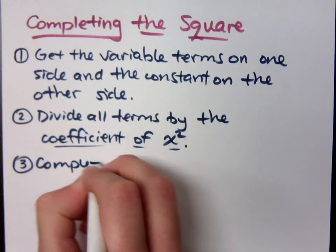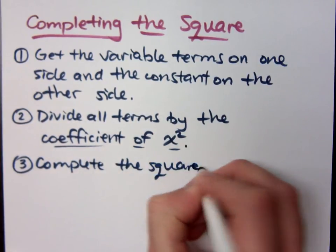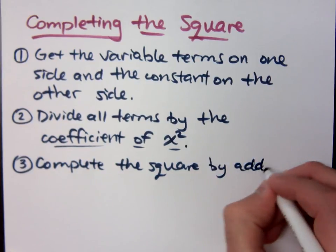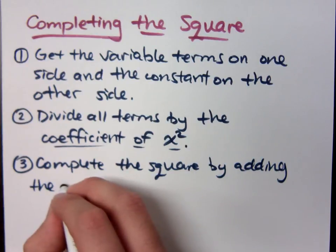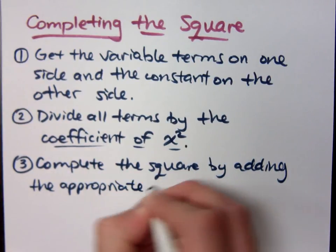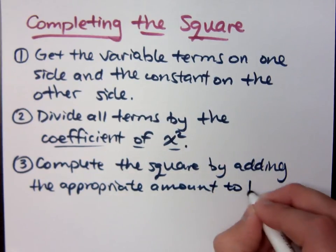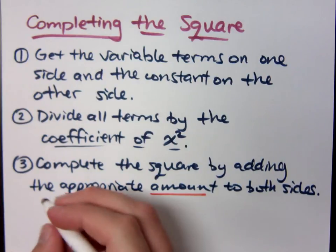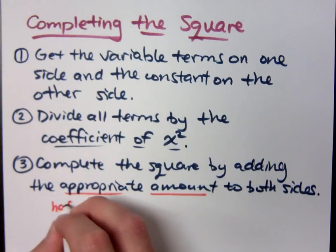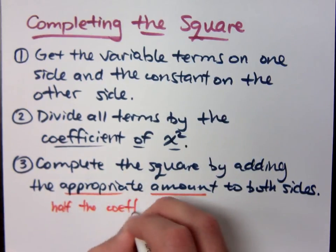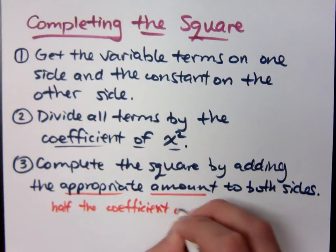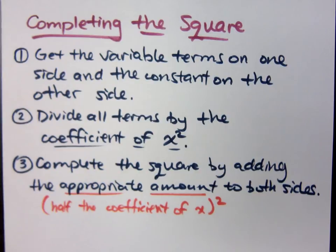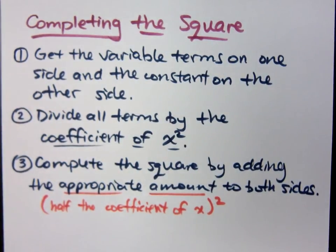The next part is where we actually complete the square. We complete the square by adding the appropriate amount to both sides. That appropriate amount is half the coefficient of x, and then squared — that's the amount that we add to both sides. You may remember the little jingle: divide by two and square it.